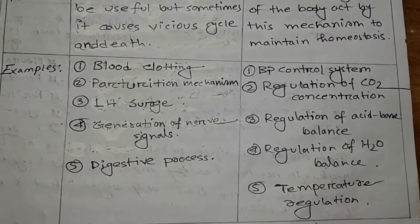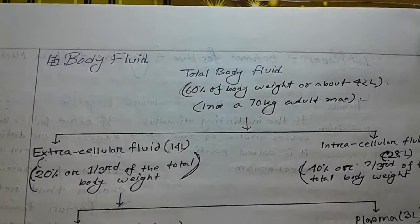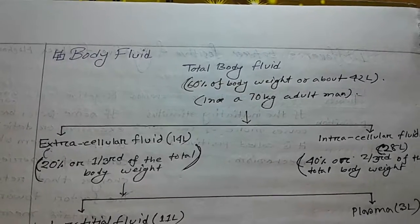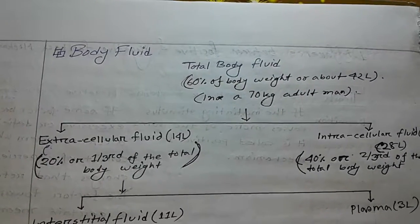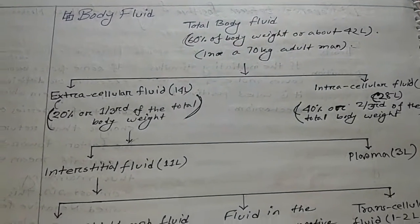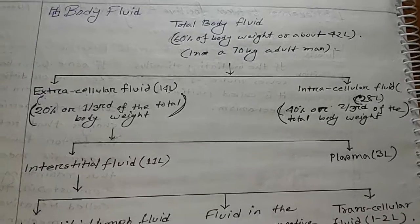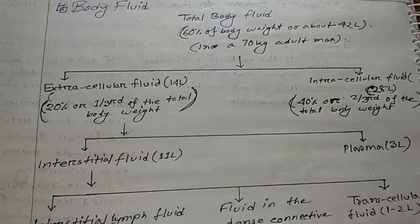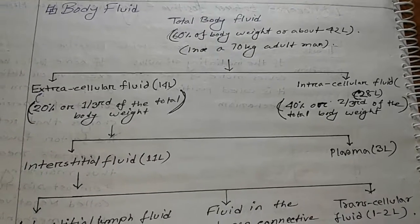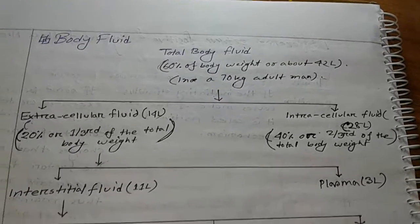Now, body fluid. Total body fluid is 60% of body weight, or about 42 liters in a 70 kg adult man. Total body fluid is of two types: Extracellular fluid (ECF) and Intracellular fluid (ICF). ECF constitutes 20%, or one-third of total body weight. ICF constitutes 40%, or two-thirds of total body weight.